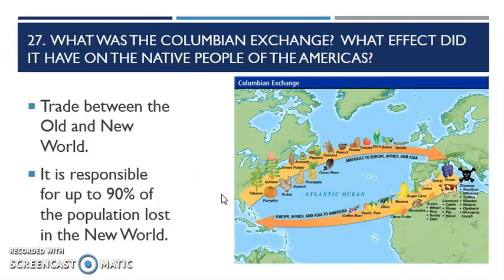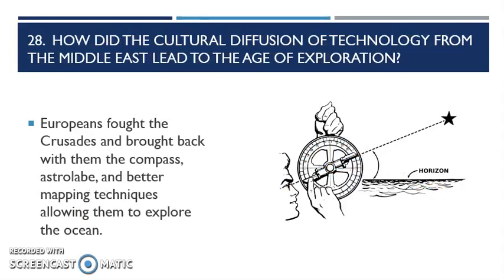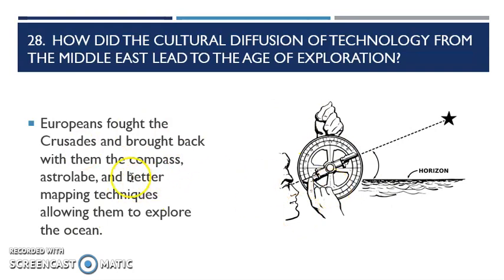This is a depopulation of the Americas. Question 28 is: how did the cultural diffusion of technology from the Middle East lead to the age of exploration? When the Crusades happen, those European knights go into the Middle East to try and get Jerusalem back from the Muslims, but they don't — it's not a successful journey. There were like five or six Crusades. But they do take things back — all soldiers do. One of the things they take back is the compass, the astrolabe, and better mapping techniques.